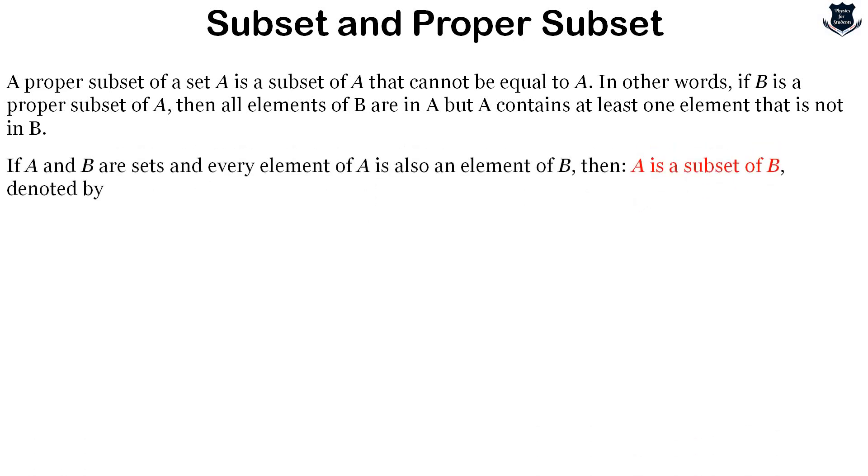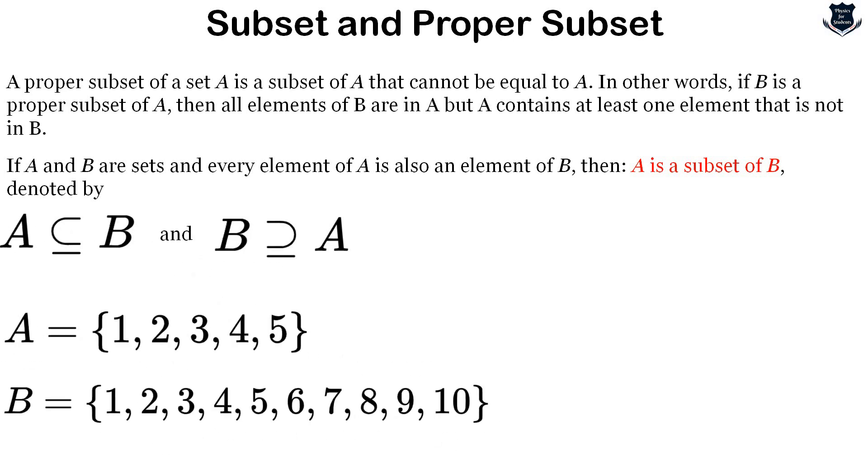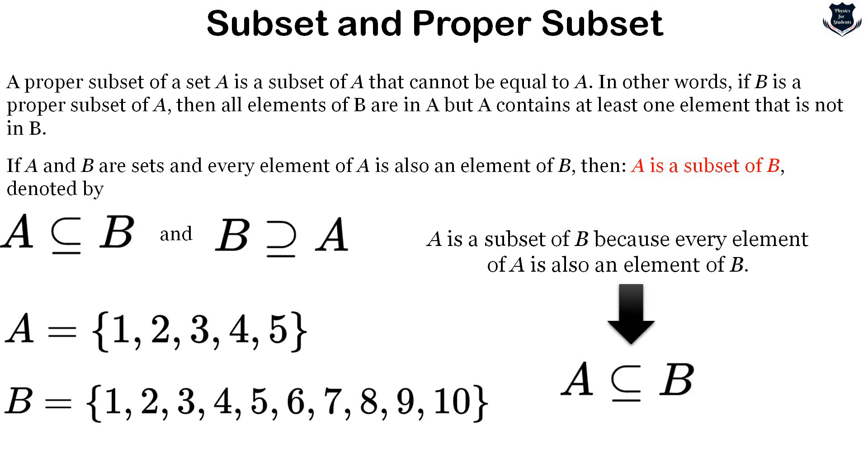Let me revisit this concept. If A and B are sets and every element of A is also an element of B, then A is a subset of B, denoted by this symbol. B becomes a superset of A. For example, if A is the set of numbers 1 to 5 and B is 1 to 10, then A is a subset of B because every element of A is also an element of B, plus B contains more elements.